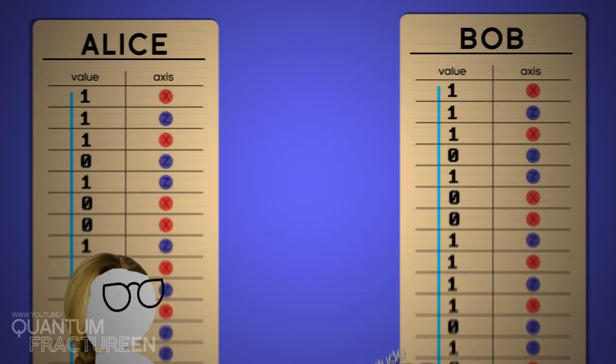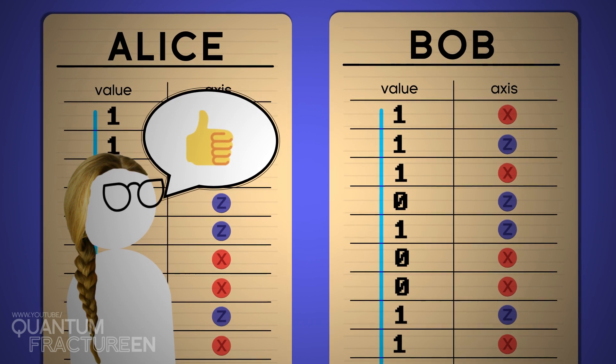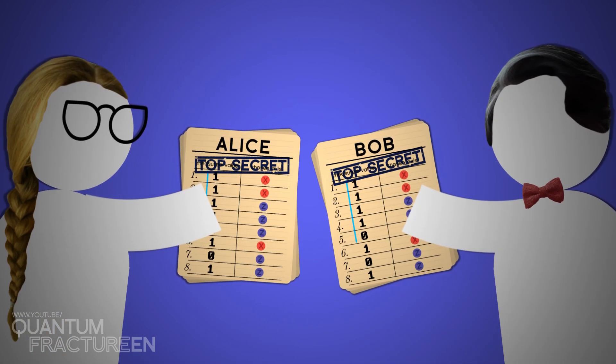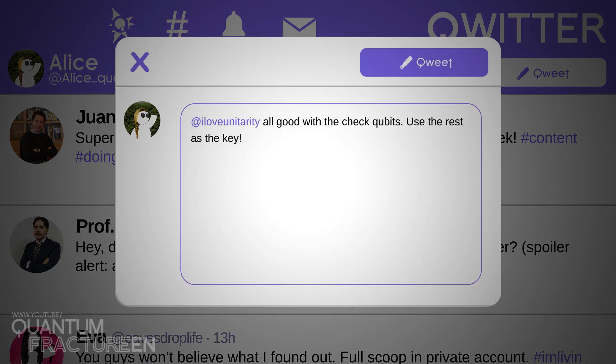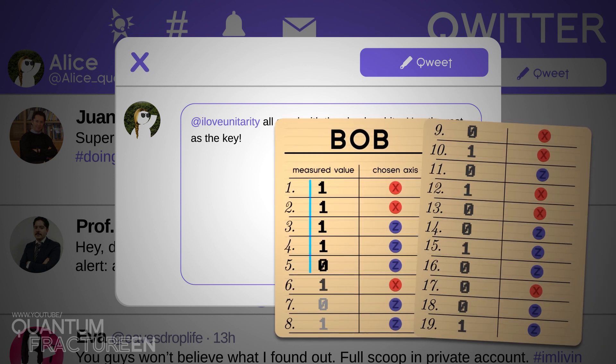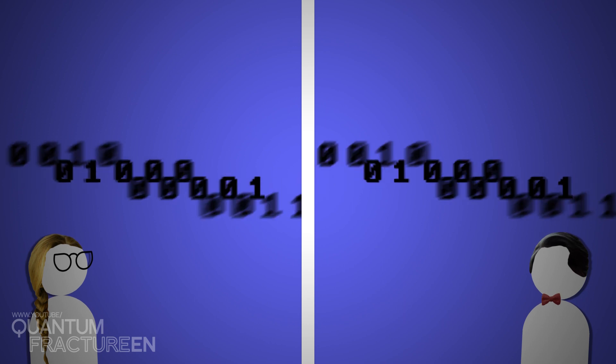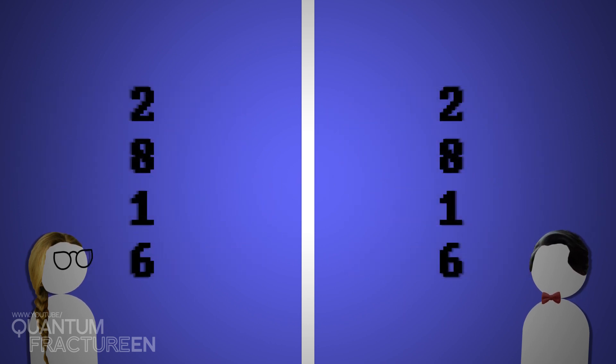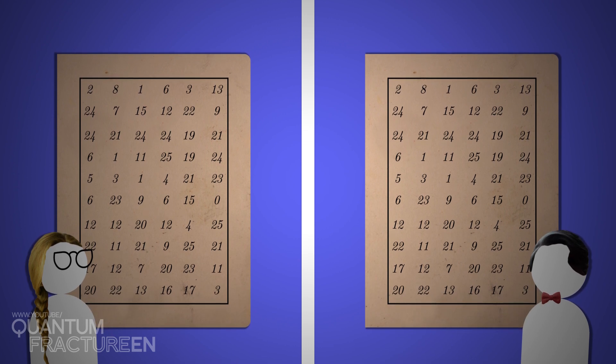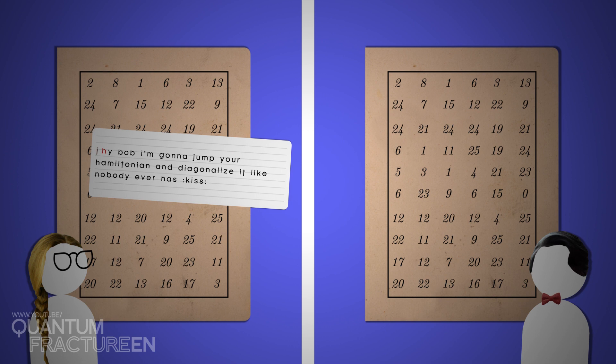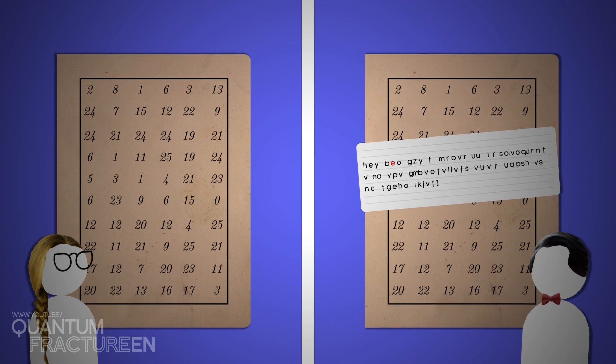If Alice checks enough qubits and doesn't see any errors, she can be certain that only she and Bob touched the string she sent. There's secure data that only she and Bob know. So, to conclude the process, Alice tells Bob that everything came up Milhouse and they can use the rest of the results they didn't make public as a key. Working independently, Alice and Bob take the bit sequence and convert it from the binary system to the decimal system. They've created a one-time pad page. Alice just has to shift each letter in her message the number of times indicated on the page, and when Bob receives the message, he does the same in reverse.